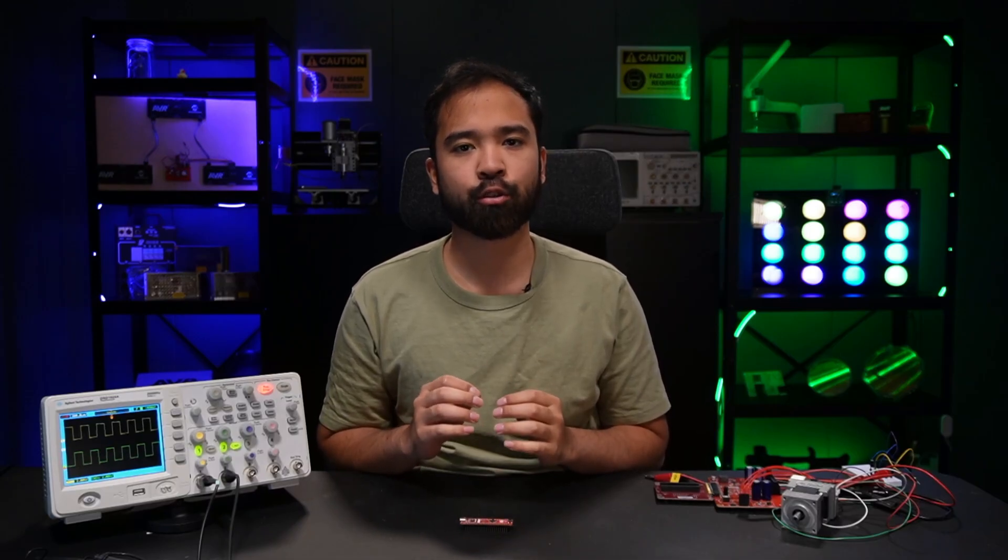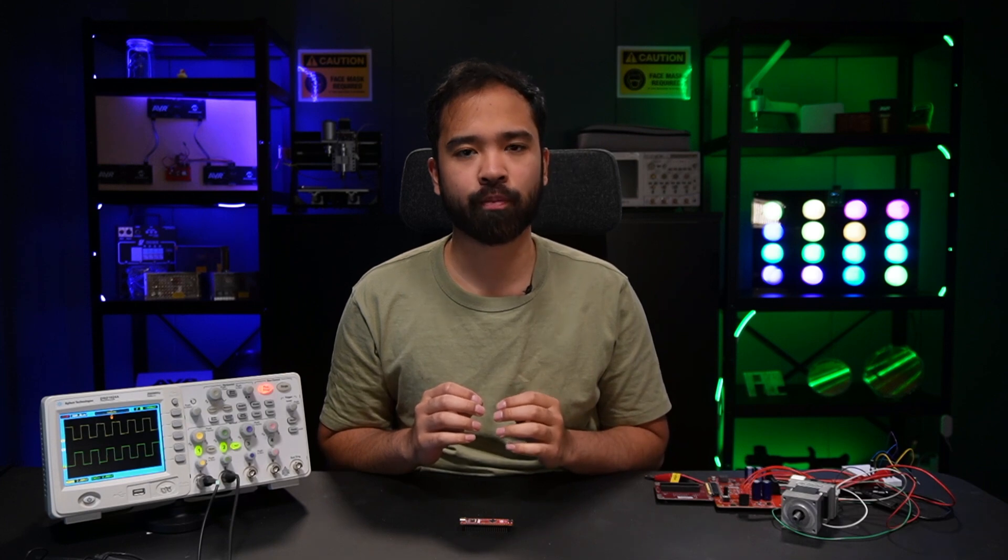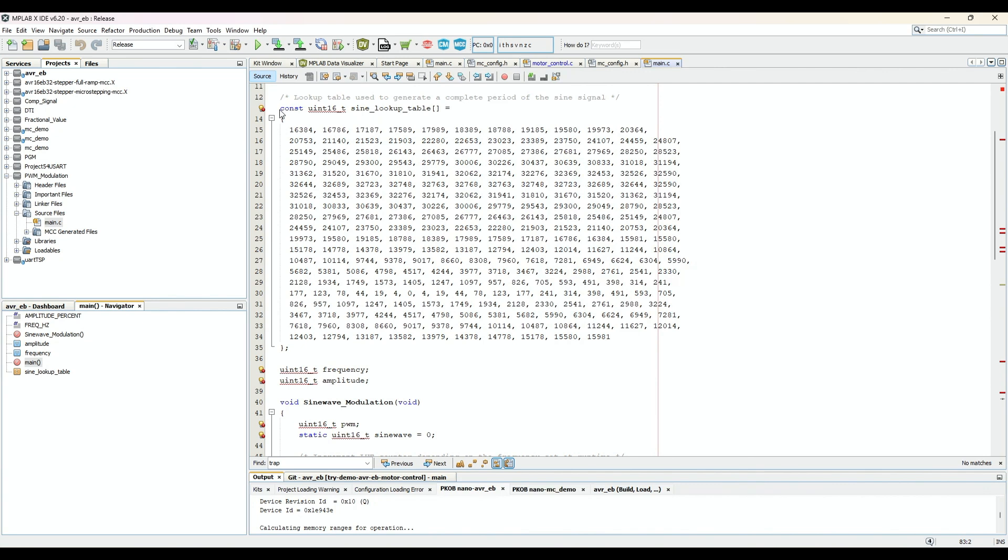In addition to the compare register, the TCE also has the amplitude and offset register. These allow an extra level of control for the waveform. So let's say we have a sinus signal using a lookup table and a low-pass filter.